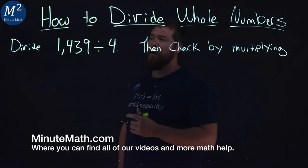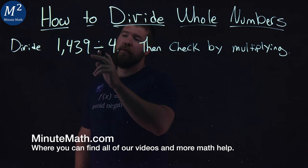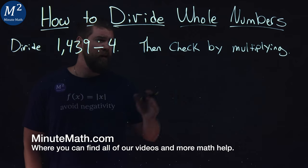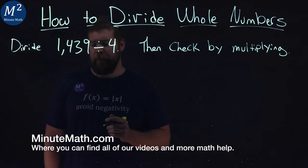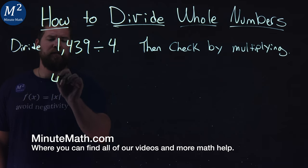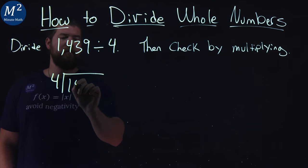We're given this problem right here. Divide 1,439 by 4. We're going to check by multiplying. Let's go set up our long division here. 4 divided by 1,439.